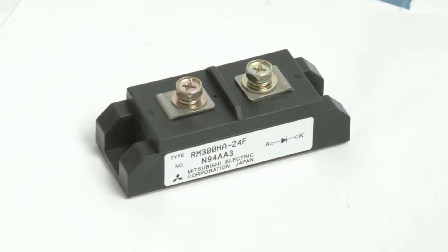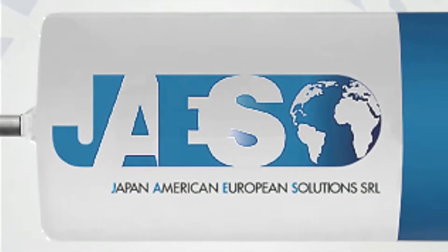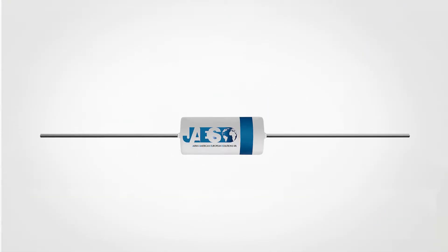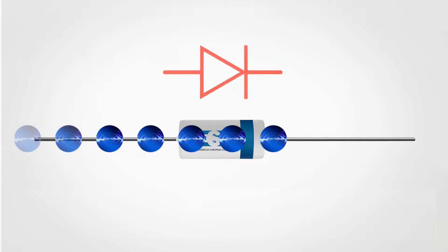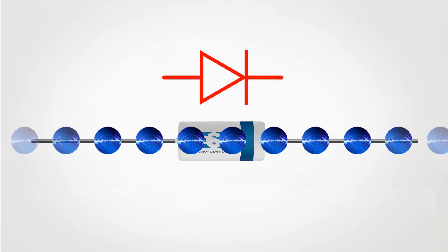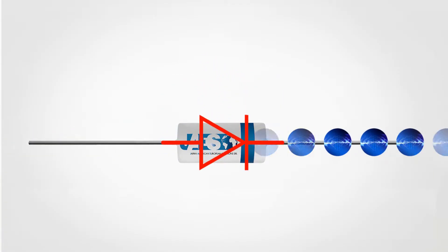The diode is a mainly resistive nonlinear passive electronic component with two terminals whose function is to allow the flow of electric current in one direction and virtually block it in the opposite direction.